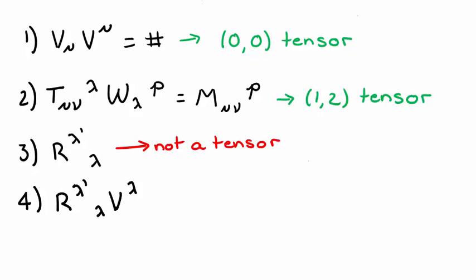Based on that last question, number four may appear at first to also not be a tensor. But notice that the unprimed index lambda is a contracted index. So this net tensor only has one upper index. So we can actually say that all its indices are primed, and it actually is a tensor. Specifically, we classify it as a 1-0 tensor.